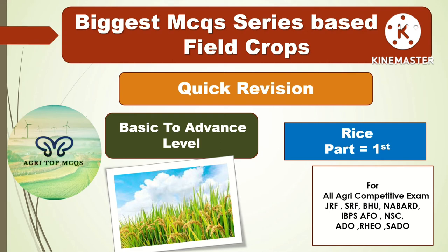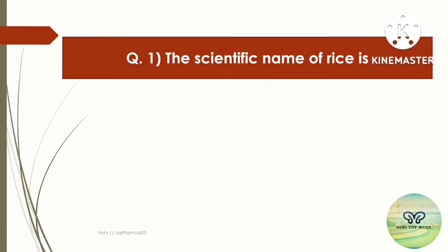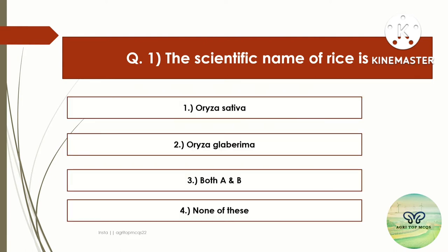Hello friends, today we are going to start the MCB series based on field crop. The first crop is rice, part one. The first question is: the scientific name of rice is — options are Oryza sativa, Oryza glaberrima, both A and B, or none of these. The right answer is both A and B. The scientific name of rice is Oryza sativa and Oryza glaberrima, both.